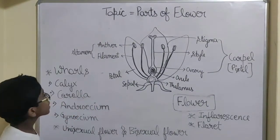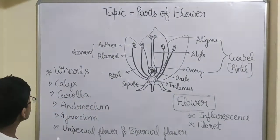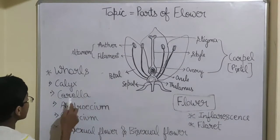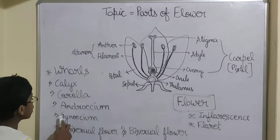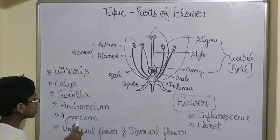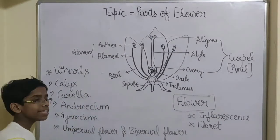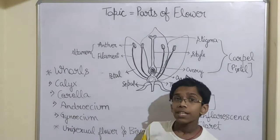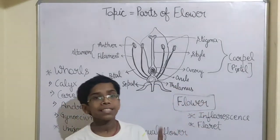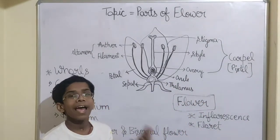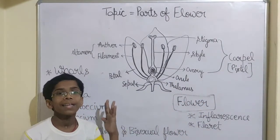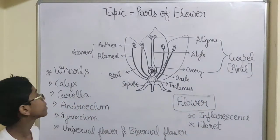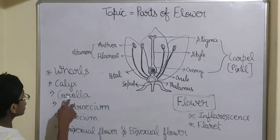So guys, there are four whorls which are named as calyx, corolla, androecium, and gynoecium. So what are these four whorls? Calyx, corolla, androecium, and gynoecium.